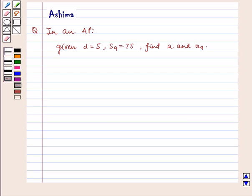Hello and welcome to the session. Let us understand the following question which says in an AP given D is equal to 5, S9 is equal to 75, find A and A9.